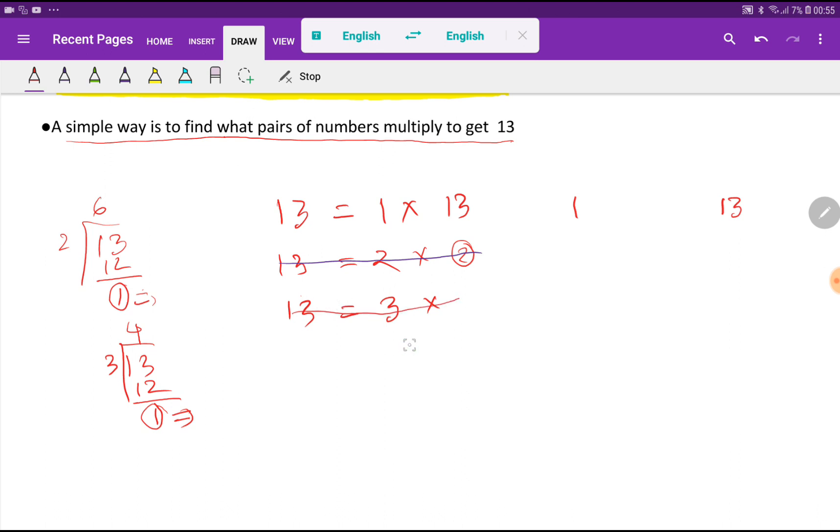Now the question is, should we stop here? 3 squared equals 9, which is less than 13. This less than indicates that I should continue.